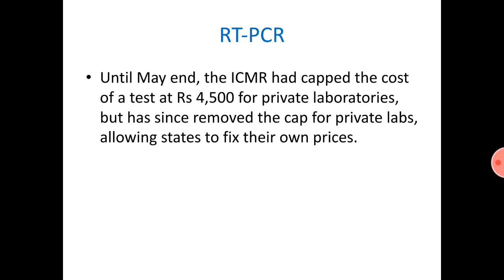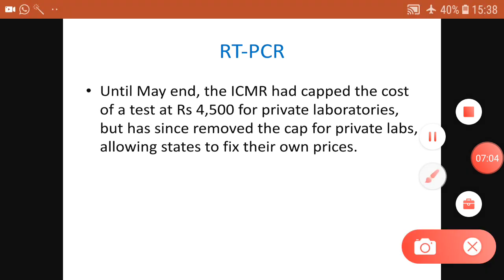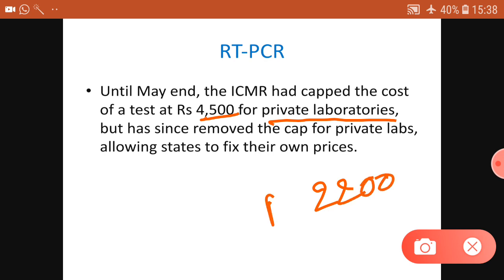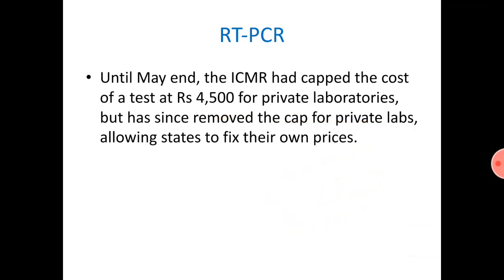Until the end of May, ICMR had capped the cost of RT-PCR at 4500 rupees for private laboratories. Now it has removed the cap for private labs, and state governments are fixing their own prices. Telangana, for example, has fixed the price at around 2000 rupees. Different states are fixing different price caps, also covering treatment and room rent, to prevent private hospitals from exploiting patients.